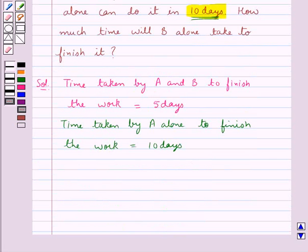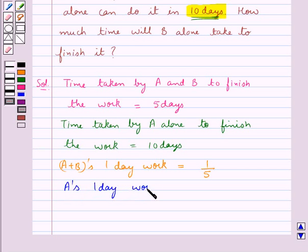In 5 days A and B together finish a piece of work. So A plus B's one day work is given by 1 upon 5. This means in one day A and B together finish 1 upon 5 of the work. Now in 10 days A finishes the work alone. So A's one day work is given by 1 upon 10.